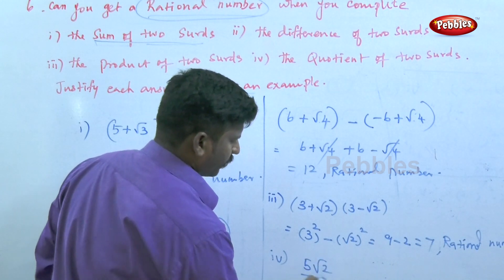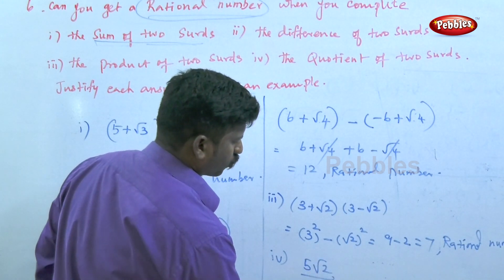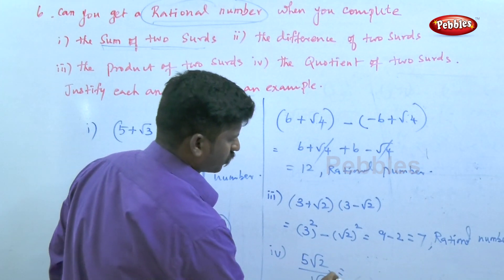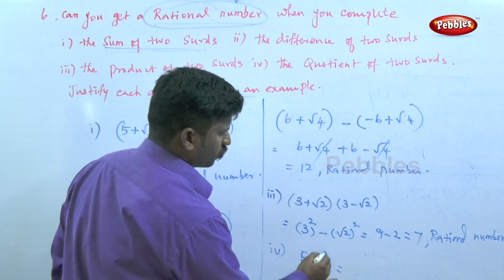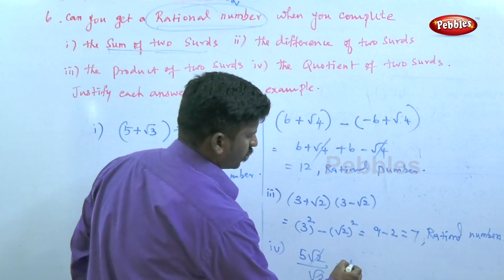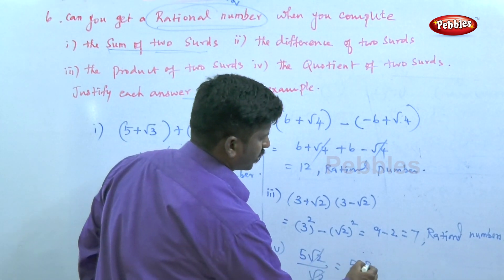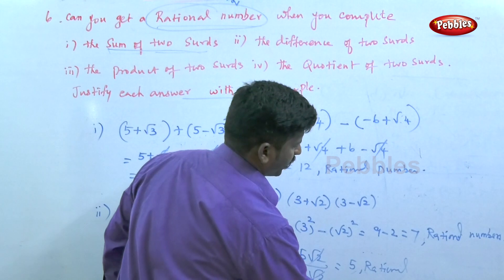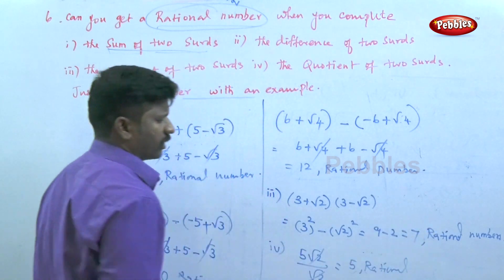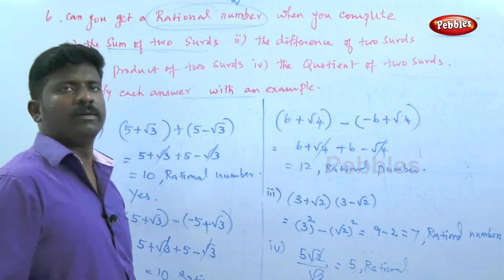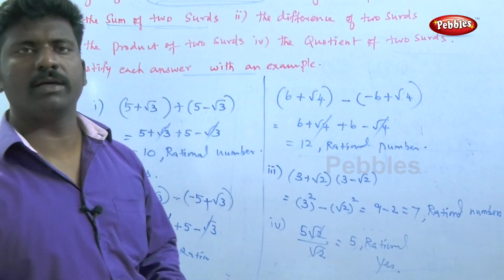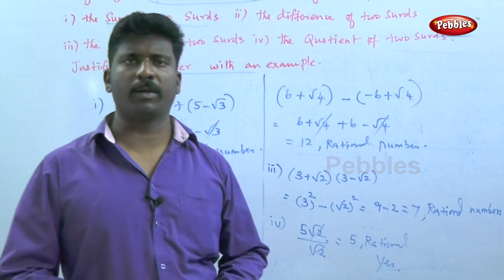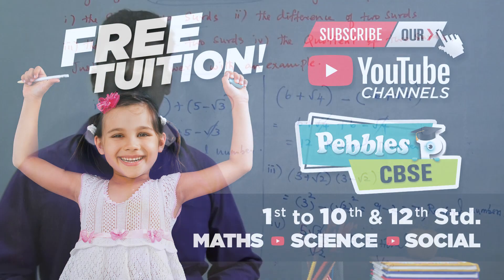For the fourth point — quotient of two surds: 5√2 divided by √2. The √2 cancels, leaving 5, which is a rational number. So yes, we can get a rational number from the quotient of two surds as well.